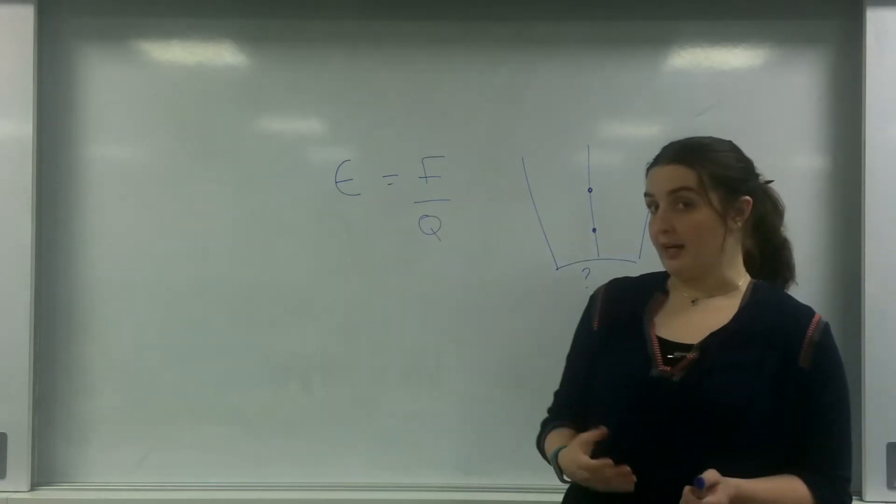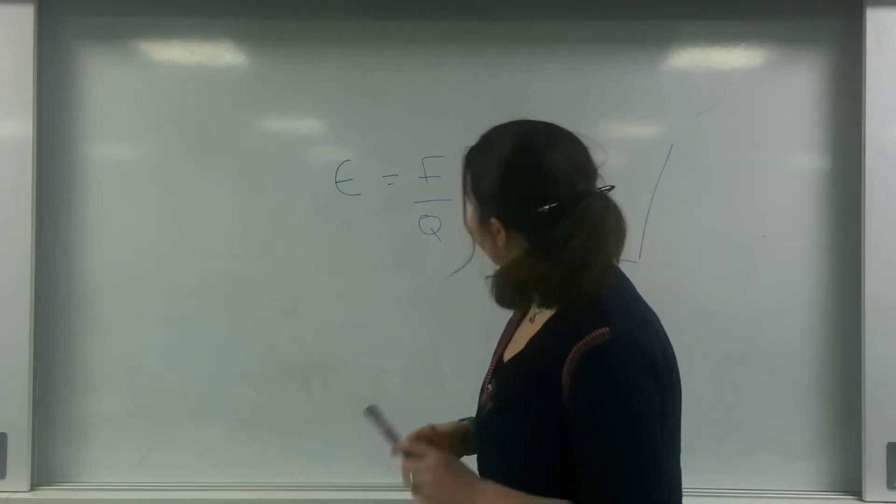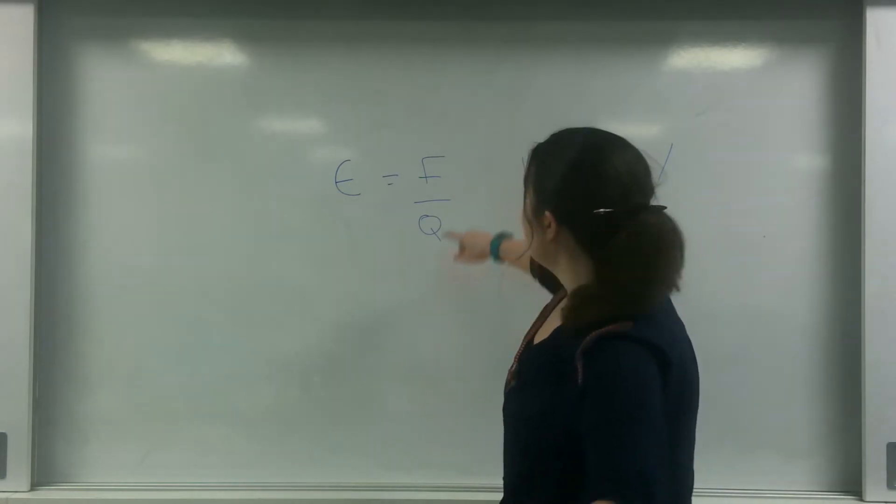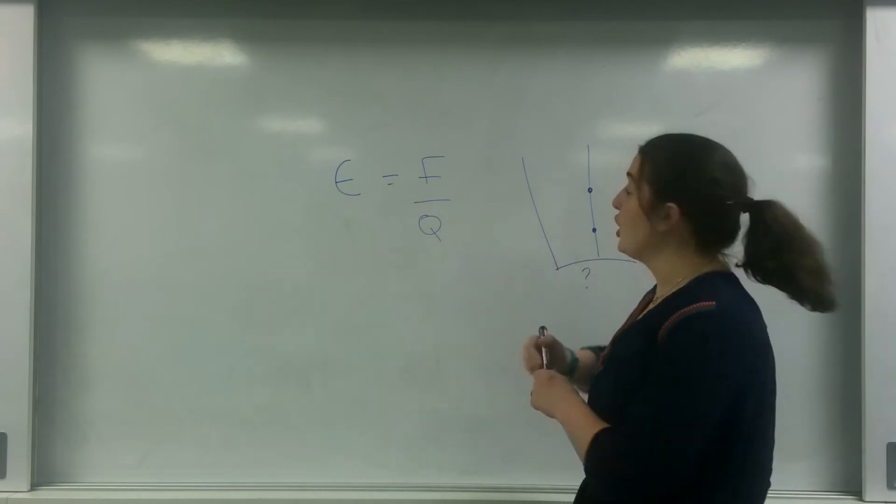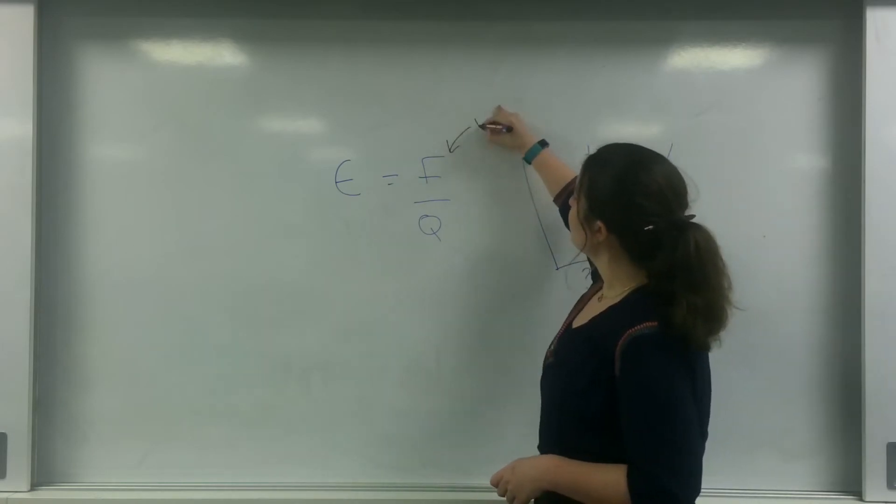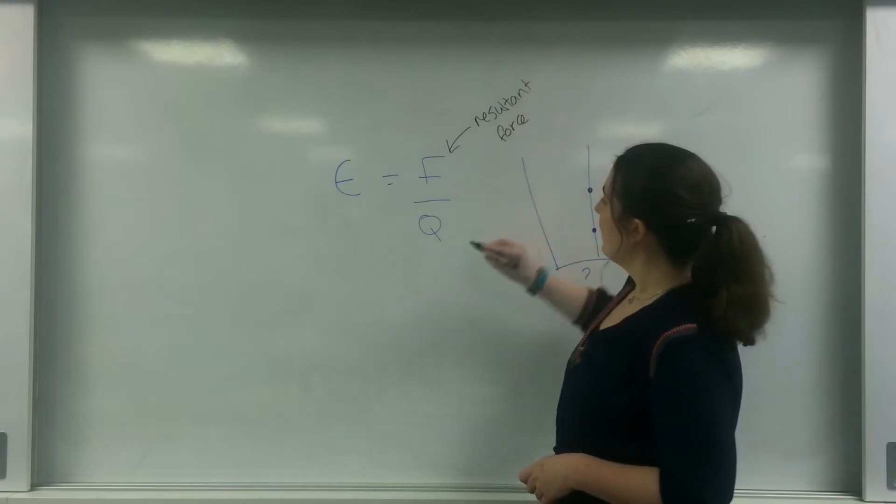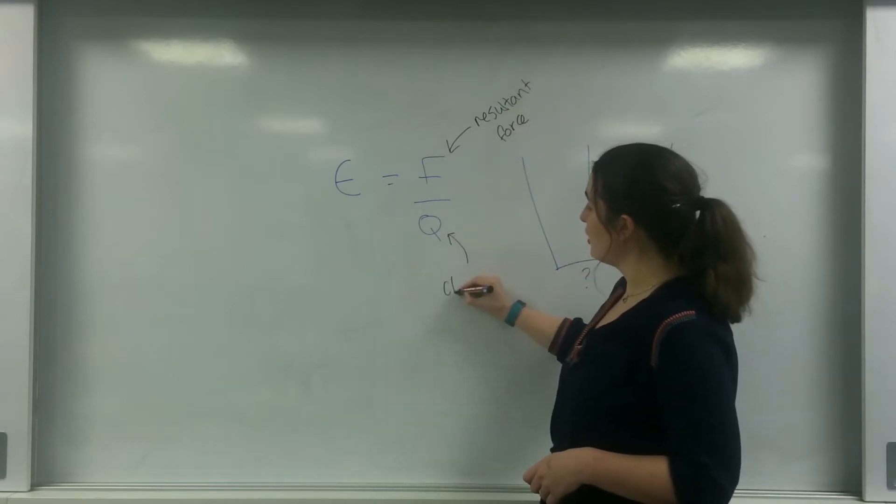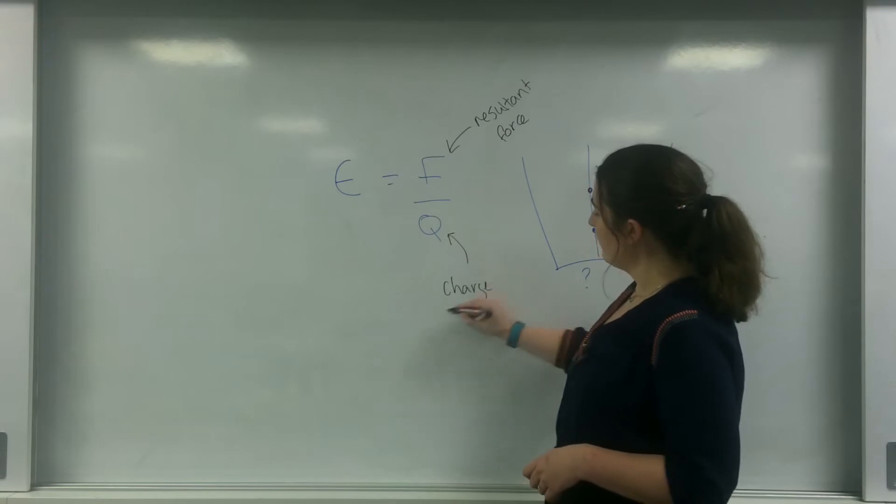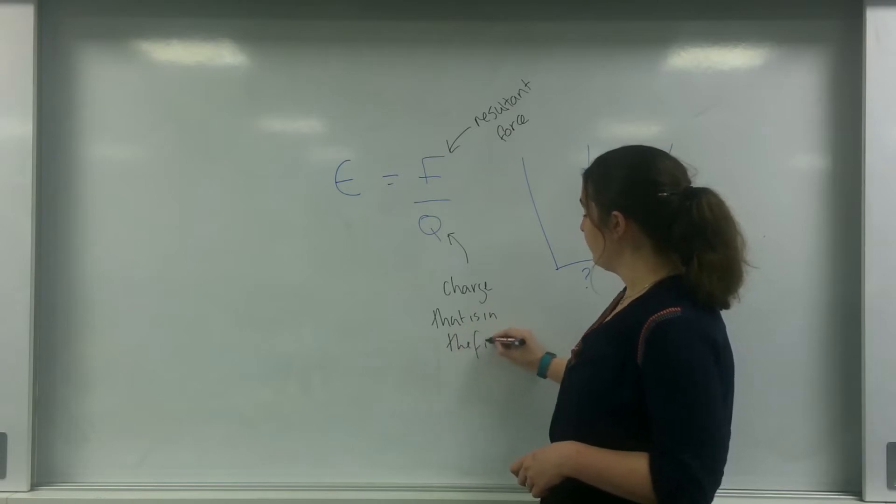So the field strength here, the equation for field strength E, is force per unit charge. So this is the resultant force, and this here is the charge that is in the field.